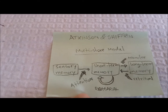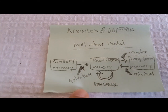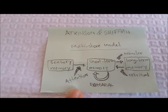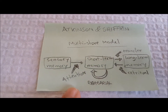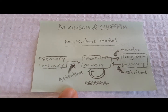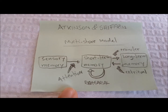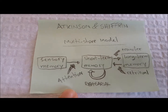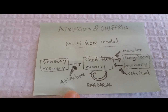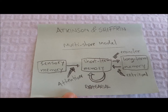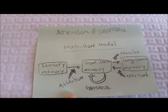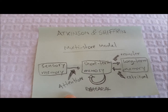We come to Atkinson and Shiffrin. They are the ones who came up with the multi-store model. As we have discussed in some videos, we have three large groups of memory. The first one is sensory memory that lasts about a second, less than a second. Whatever input you're getting from the environment, if you decide to pay attention — and sometimes it's involuntary — you can transfer that information into the short-term memory.